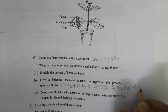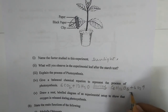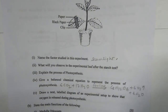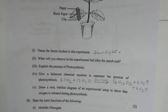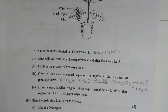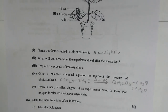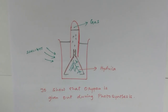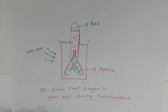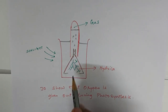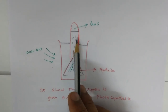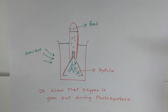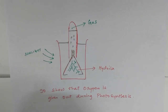Number five — draw a neat labeled diagram of an experimental setup to show that oxygen is released during photosynthesis. I have drawn the diagram showing the hydra plant, and the presence of bubbles indicates that oxygen is produced during photosynthesis.